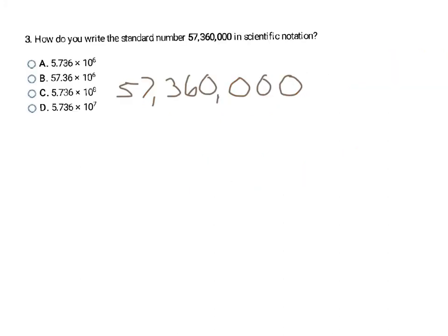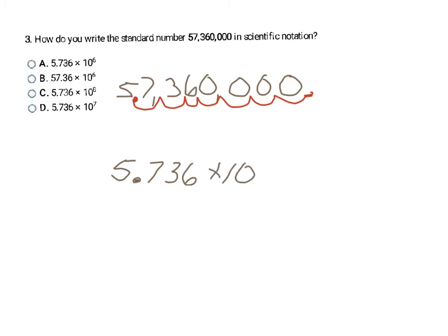Now I'm starting with a really big number and need to write it in scientific notation. Remember, when there's no decimal shown, it's always invisible at the end. I count how many places I'd move it to create a number greater than or equal to 1 but less than 10 — 5.7365 fits that. I had to move the decimal 7 times, so the exponent is positive 7 since I started with a big number. That makes my final answer D.